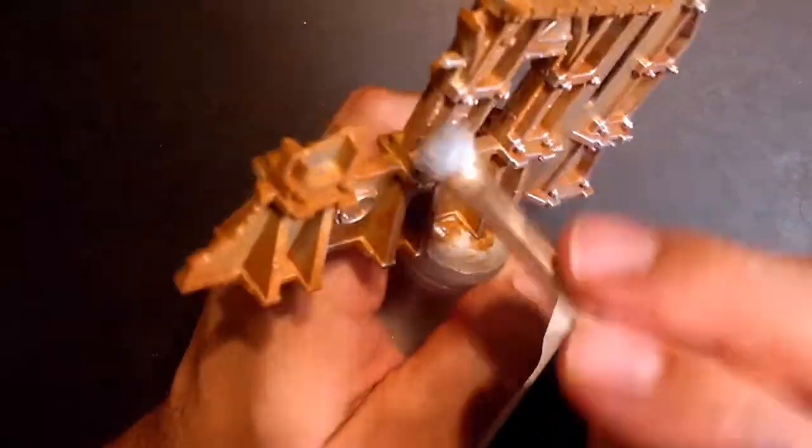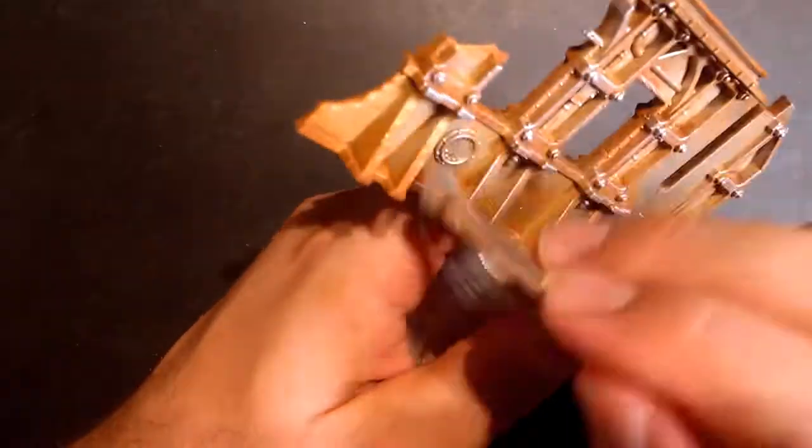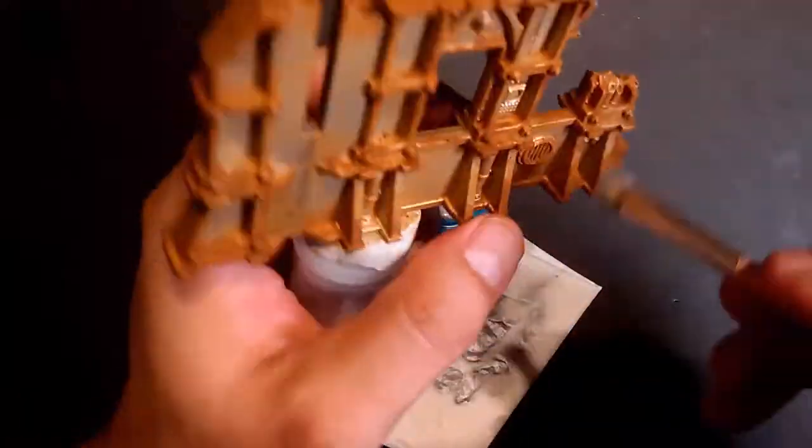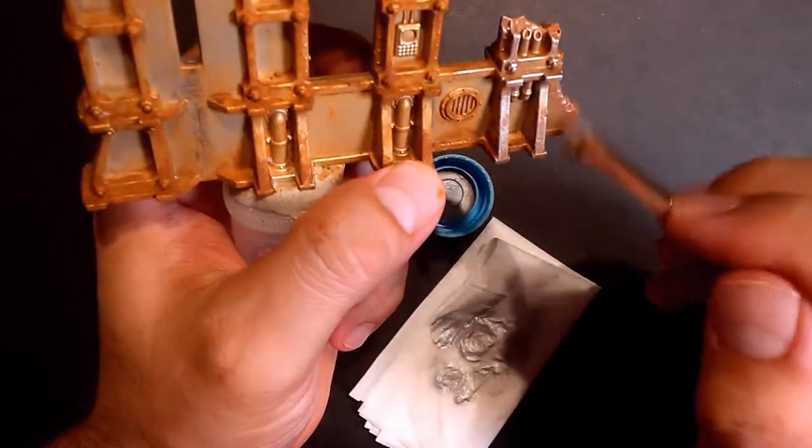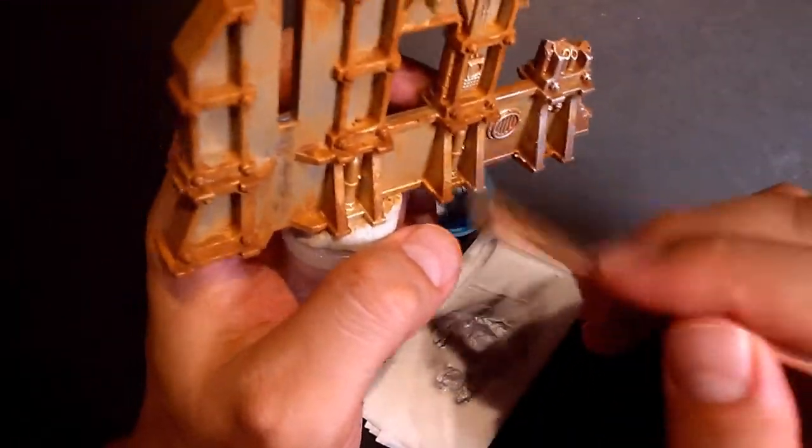The intent of this step is to pick up those subtle details we introduced with the thick pigment paste, as well as those that came with the model. It may look like we are moving back, introducing fresh metal on the structure, but this step is really important to introduce some contrast that makes the rust look more realistic. So take your time and just don't overdo it, cause otherwise you screw everything up.